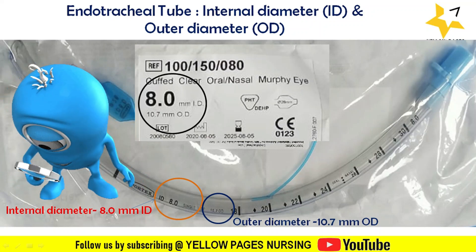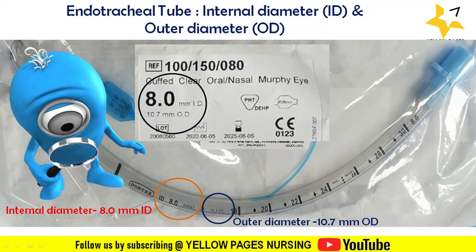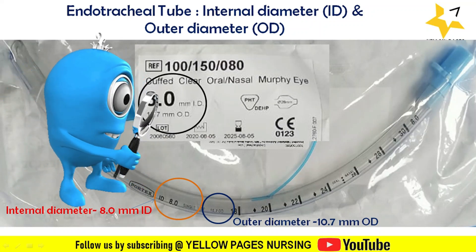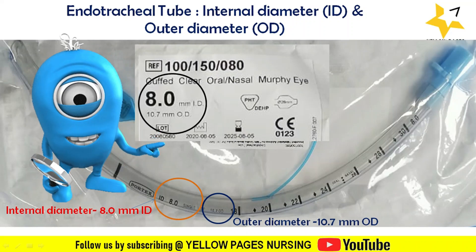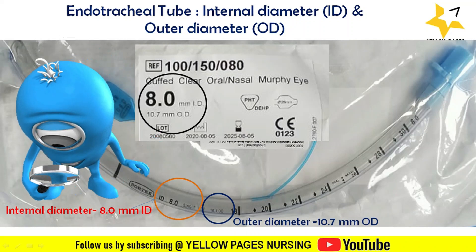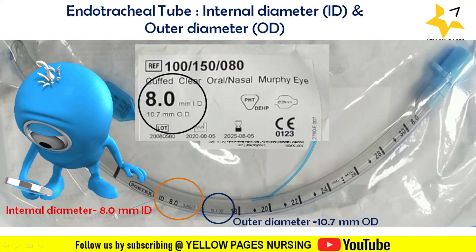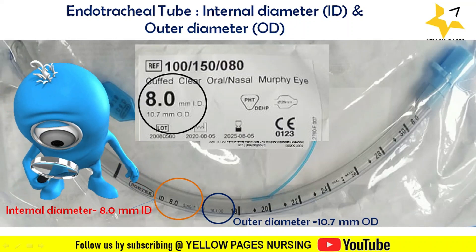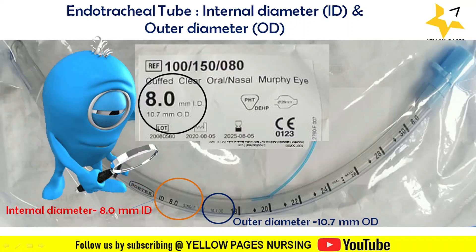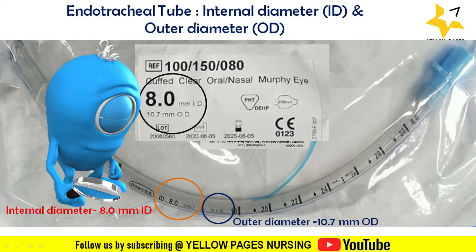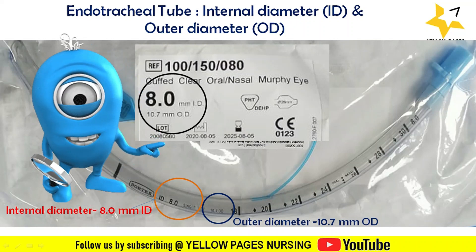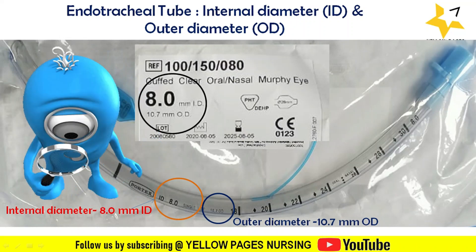To select an appropriate size suction catheter, we need to know the internal diameter and outer diameter of the endotracheal tube. Here you can see an image of an endotracheal tube with the internal diameter and outer diameter highlighted, showing an internal diameter of 8 mm and an outer diameter of 10.7 mm.